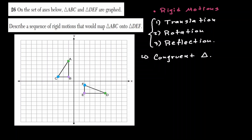The first thing I notice is that there seems to be some kind of rotation going on here. Notice that this green angle A is at the top, and then it ends up being on the right. It's like this triangle got pushed over to the right-hand side. And the same goes with angle C — it was on the left and ends up on the top. So perhaps the first rigid motion is some form of rotation.